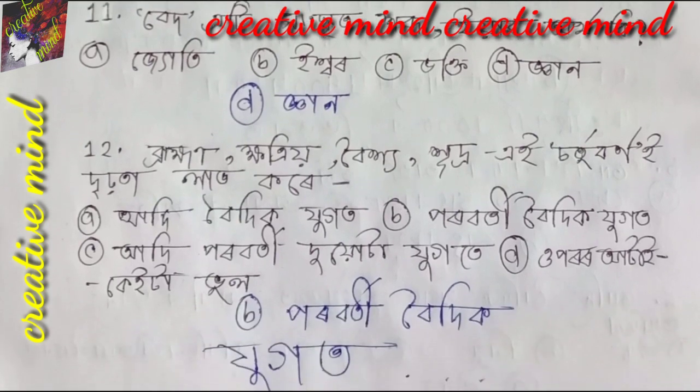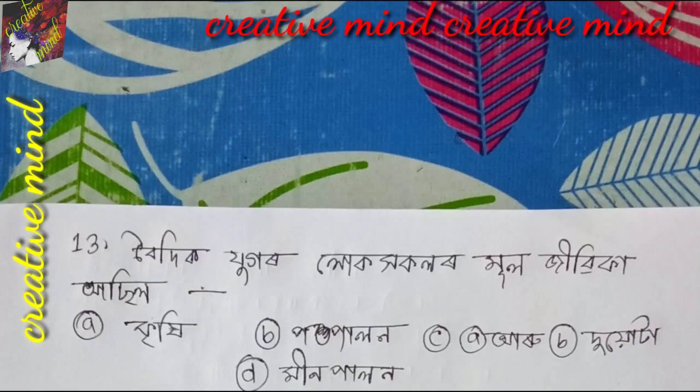Legislative. Question number 13: Boidik Jugaar Lokho Color Mool Zeebika Asil. Option A: Krihi. Option B: Pohupalon. Option C: A Aru B Do Ita. Option D: Min Do Ita. A Aru B Do Ita — mane Krihi Aru Pohupalon Do Ita. Hei tu bhoja se. Yarekhu Dota to hoi se. Option C: A Aru B Do Ita — mane Krihi Aru Pohupalon Do Ita. A Do Ita. Mane Boidik Jugaar Lokho Color Mool Zeebika Asil.